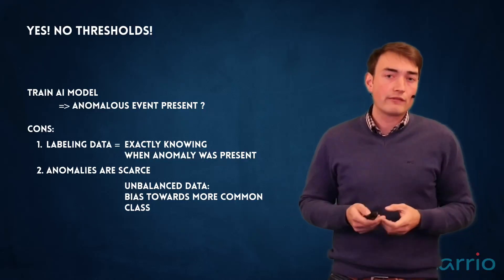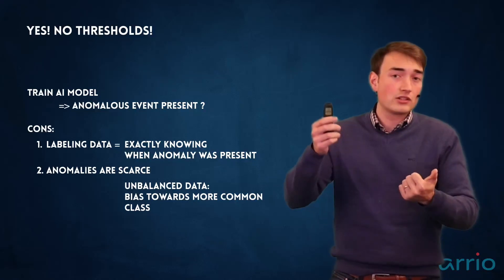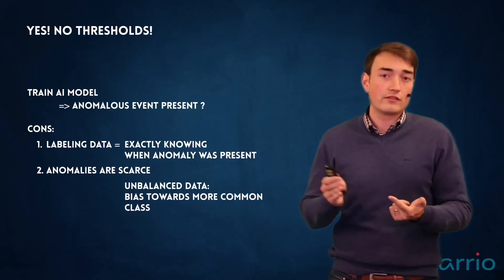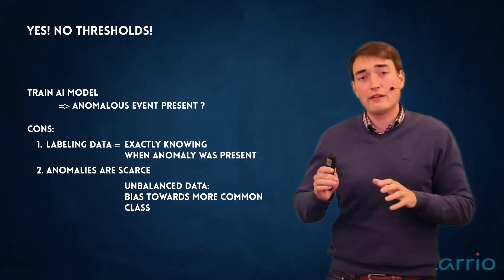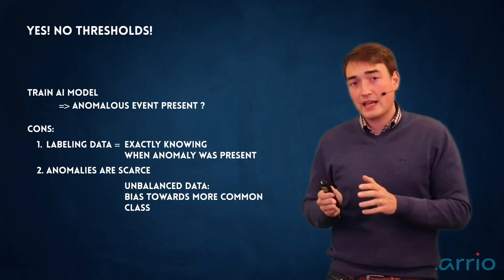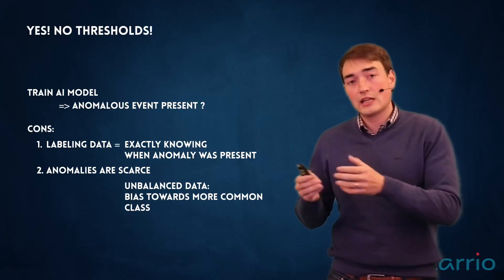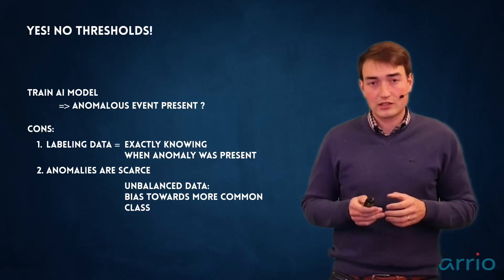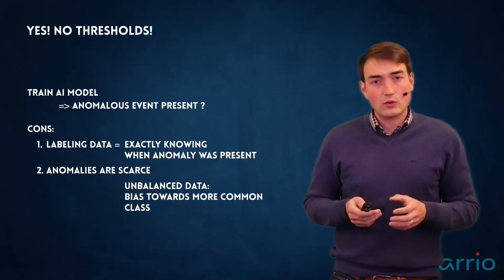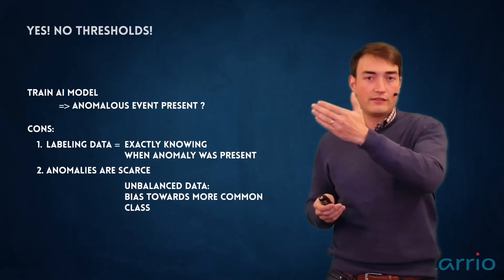coming from all these applications, but the problem is first of all you have to label them if there is an anomalous event, yes or no. And the second problem is most of the times these anomalous events are very scarce. So you have not a lot of anomalous events, so actually you have very unbalanced data and it's hard to work with unbalanced data because the model that you have trained is more biased to predict the class that has the upper hand in the data set. So that was the first thing that you can do—actually predict anomalous event, yes or no.